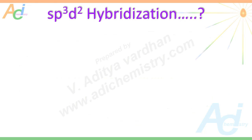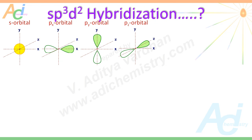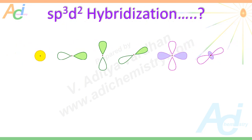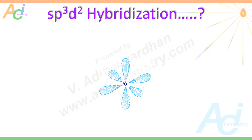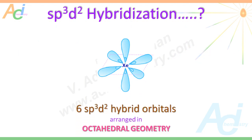Now let me explain exactly what happens in sp3d2 hybridization. The orbitals participating are: one s orbital, spherical in shape; three p orbitals — px, py, and pz — dumbbell in shape, oriented along the x, y, and z axes; and two d orbitals — dx²-y² and dz². These five orbitals from the fifth level of xenon are mixed to form new hybrid orbitals that are identical in shape, degenerate, and arranged in octahedral geometry.